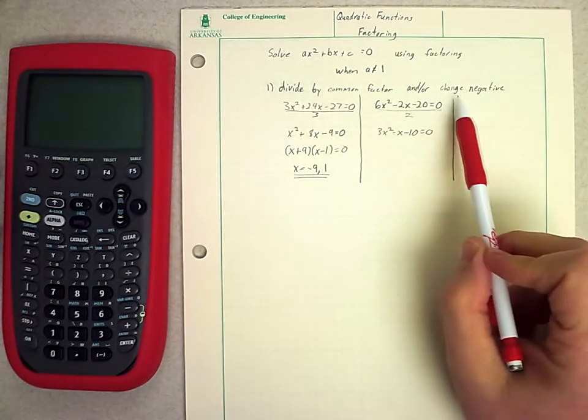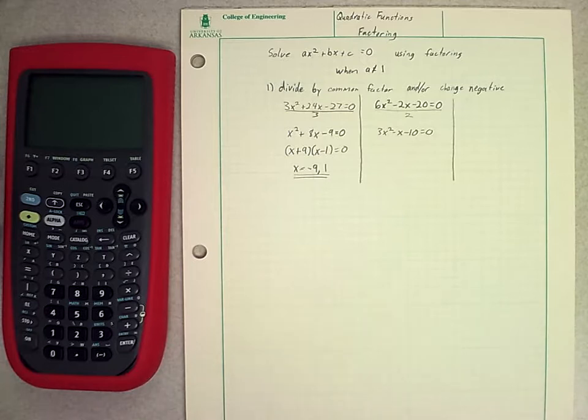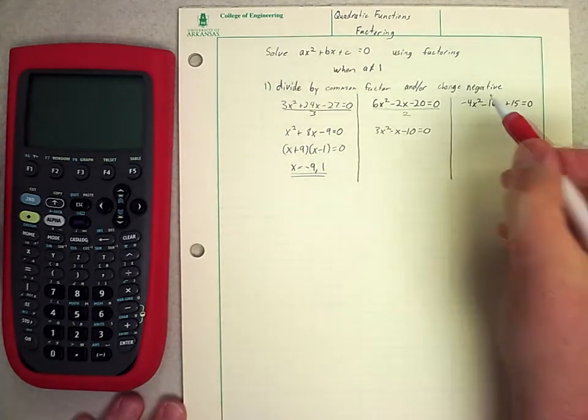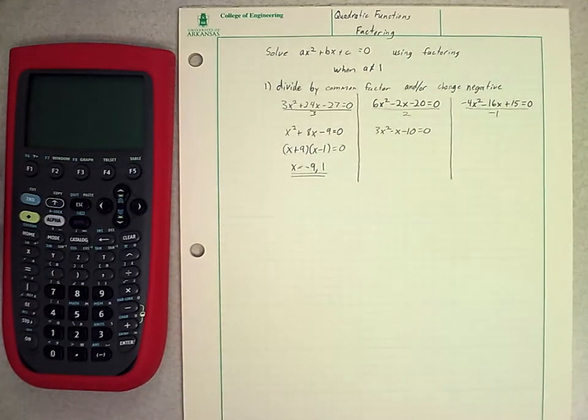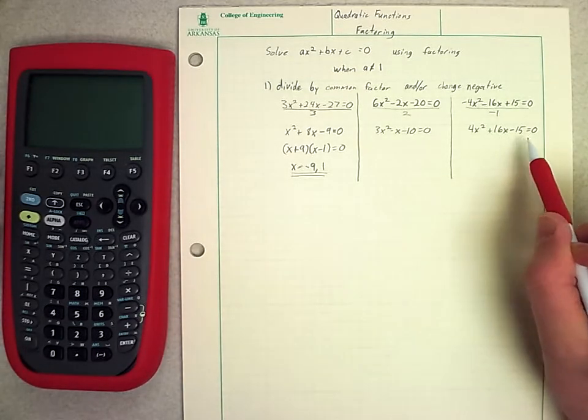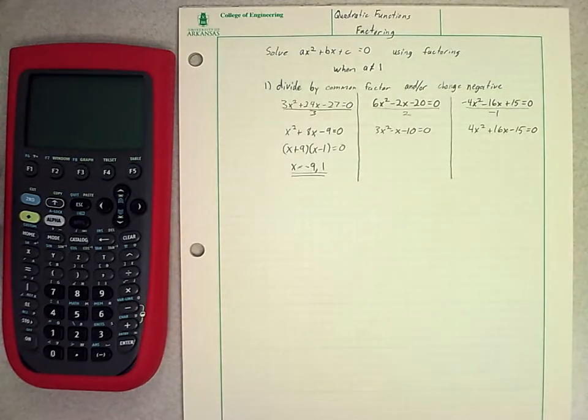The other concept we want to talk about along these same lines is changing a negative. What do I mean by that? If we have a negative value for a, it becomes a little bit strange to deal with in terms of finding factors. Most of us are much more comfortable dealing with positive numbers. So if we need to, go ahead and divide out by -1 to make that simpler. For example, if I had -4x² - 16x + 15 = 0, I can just divide this entire thing by -1. I divide everything by -1, and I get 4x² + 16x - 15 = 0. Again, not something you have to do, but a lot of us think better with positive exponents up front.